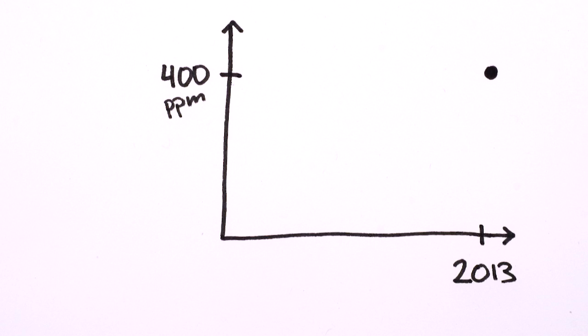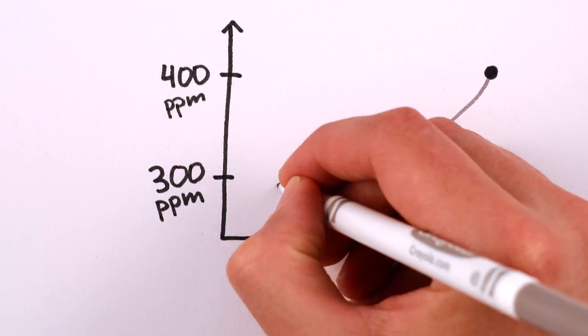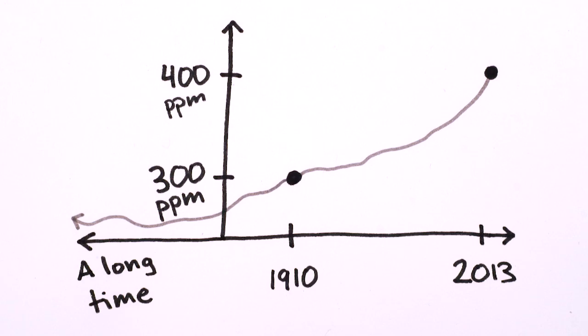This is a big change from 100 years ago, when the concentration was just 300 parts per million, below which it had stayed for more than 800,000 years.